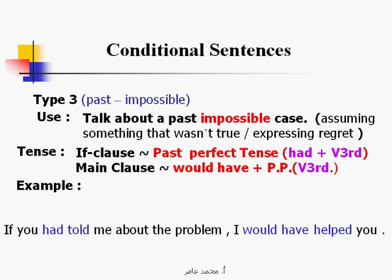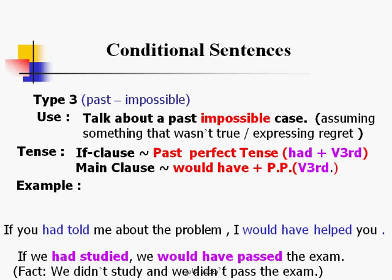For example: 'If you had told me about the problem, I would have helped you' — but unfortunately, I didn't. 'If we had studied, we would have passed the exam.' The fact: we didn't study, and we didn't pass the exam.